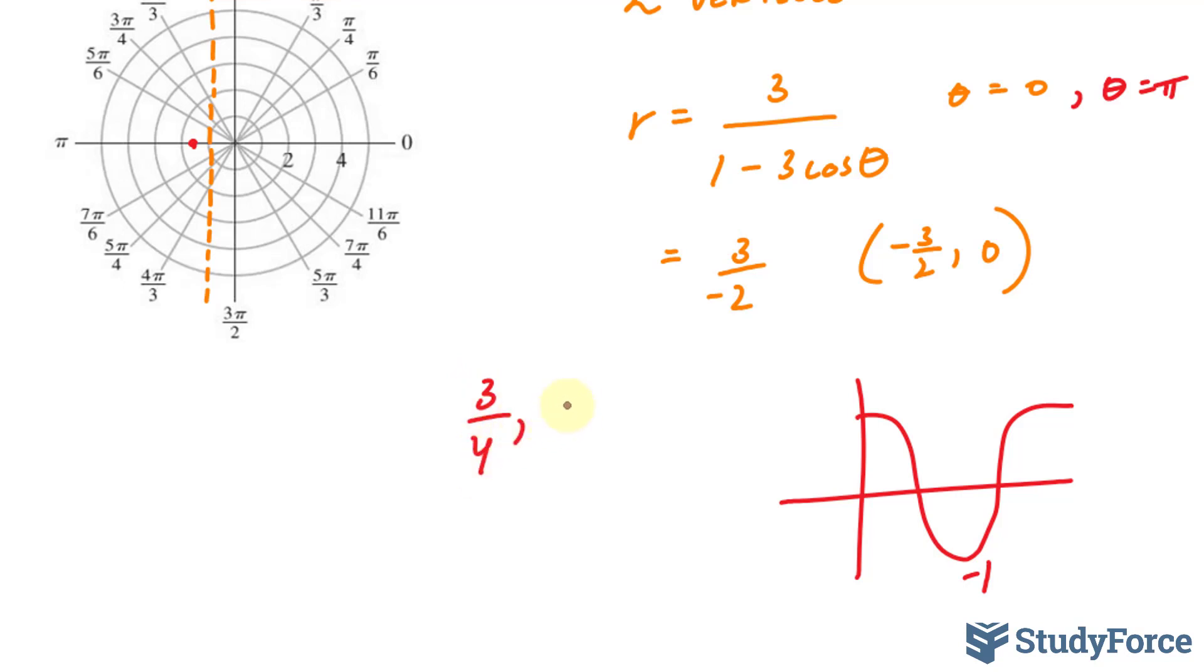3 over 4 and pi. That's our next point, our next vertex. So our angle is shooting in this direction. Pi, and it's 3 over 4. 3 over 4 is 3 quarters from the distance from here to here. So vertex 1 and vertex 2 are shown there.